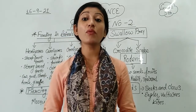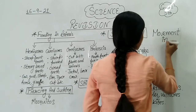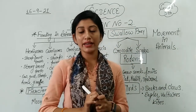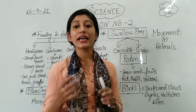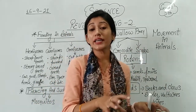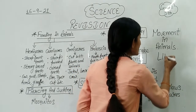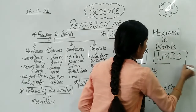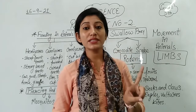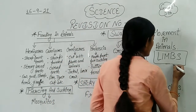Now another topic we talk about related to this chapter is movement in animals. For movement, animals have specific organs. They have legs and hands, which is why they are able to run, climb, and hold things. All these movements are done with the help of limbs. Limbs can be divided into two types: fore limbs and hind limbs.